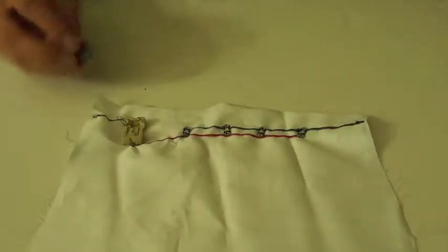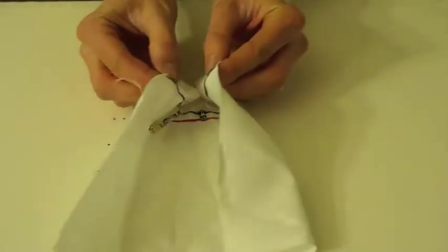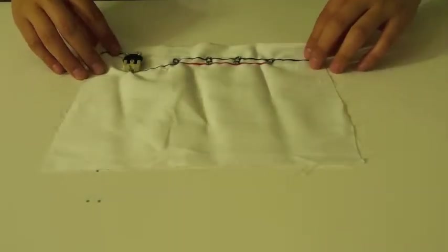Now is a good time to test and make sure your battery connections are correct. Put your battery inside the battery holder and touch the negative thread from one side of the fabric to the negative thread on the other side of the fabric. You should see the two sides light up.